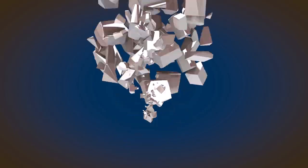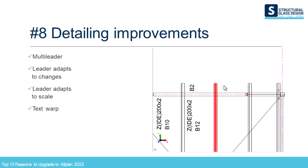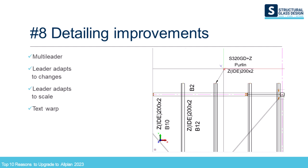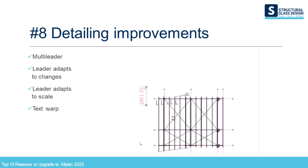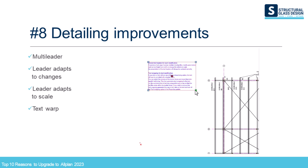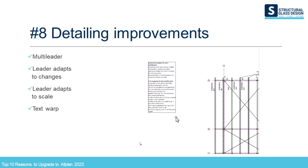Number 8. BIM elements have many attributes and users can decide which information is relevant to show. With the leader function, text can be linked to certain elements, and with the multi-leader function more indicators can be added to the initial one. Moving the text or even changing the scale will not spoil the detailing. Another long-requested feature is here for big chunks of text such as notes on your plans — you can now easily adapt a paragraph just by moving its handles.